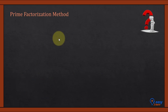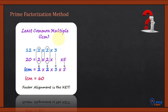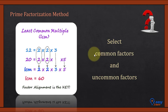Prime factorization method: for example, to calculate the LCM of 12 and 20, we write the prime factors of each. 12 = 2 × 2 × 3, and 20 = 2 × 2 × 5. These are the prime factors of 12 and 20. Now we select the common factors and uncommon factors.